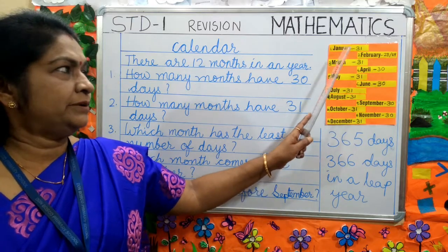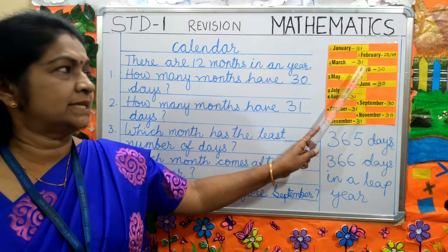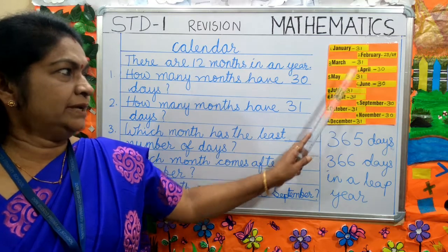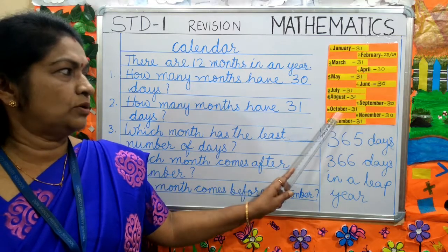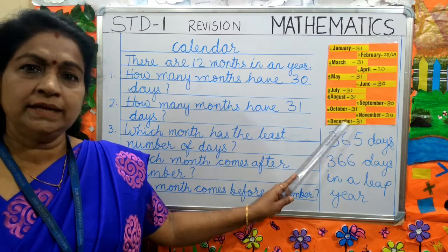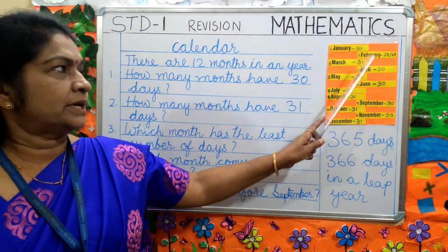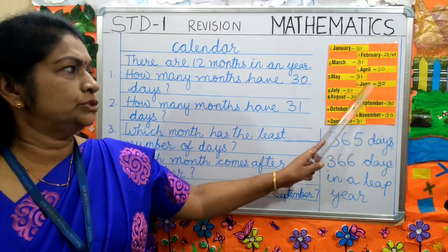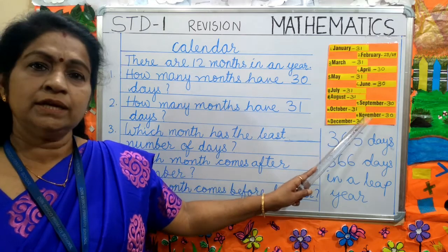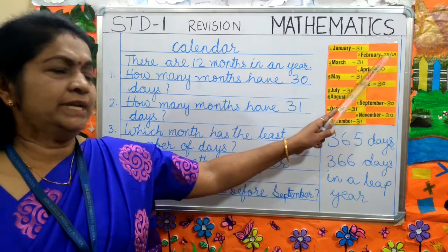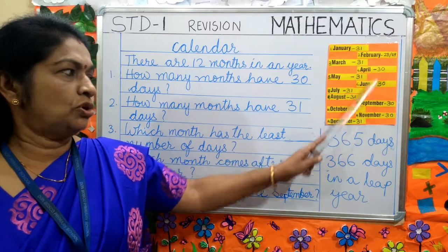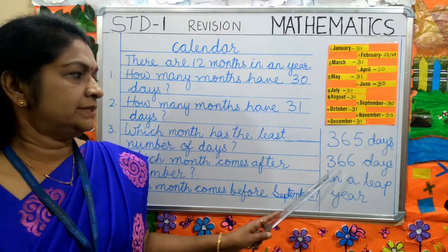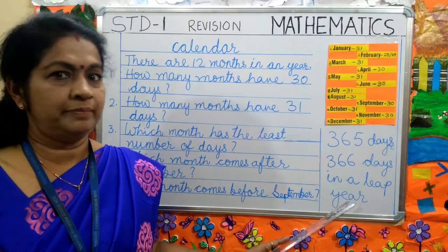Now, how many months have 31 days? January, March, May, July, August, October and December — 7 months. How many months have 30 days? April, June, September and November — 4 months. February has only 28 or 29 days. So altogether there are 365 days in a year and 366 days in a leap year.